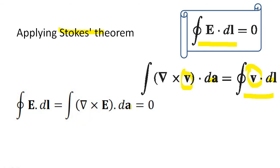As dA cannot be zero, this term should be zero, or del cross E equal to zero. That means curl of the electric field is zero.